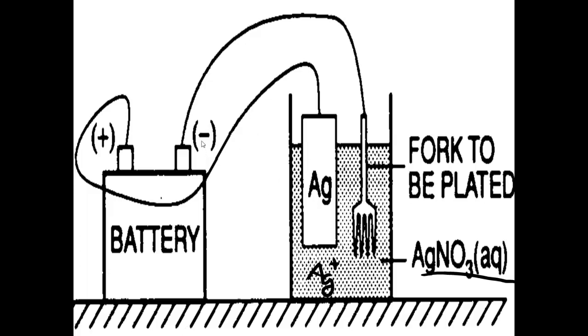As we've seen, electrons flow from negative. So the electrons are going to flow this way. That means the fork here is going to be gaining electrons. Reduction is gaining, oil rig. So that means oxidation is losing. Oxidation is happening here, reduction is happening here.